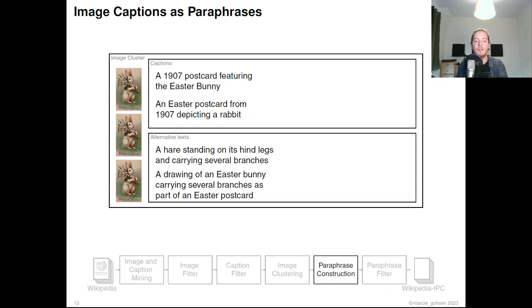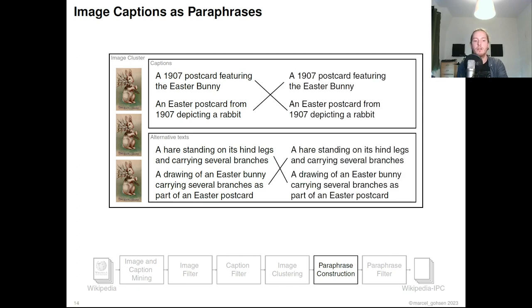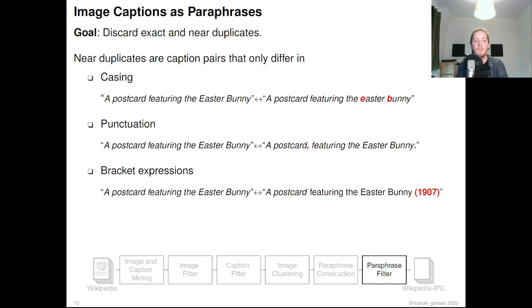Within each cluster of equivalent images, we separate captions and alternative texts. Each combination of captions and each combination of alternative texts form a set of paraphrase candidates. From these sets of paraphrase candidates, we discard duplicates and near-duplicates, which only differ in casing, punctuation, or bracket expressions. The remaining paraphrase candidates form our Wikipedia IPC dataset.